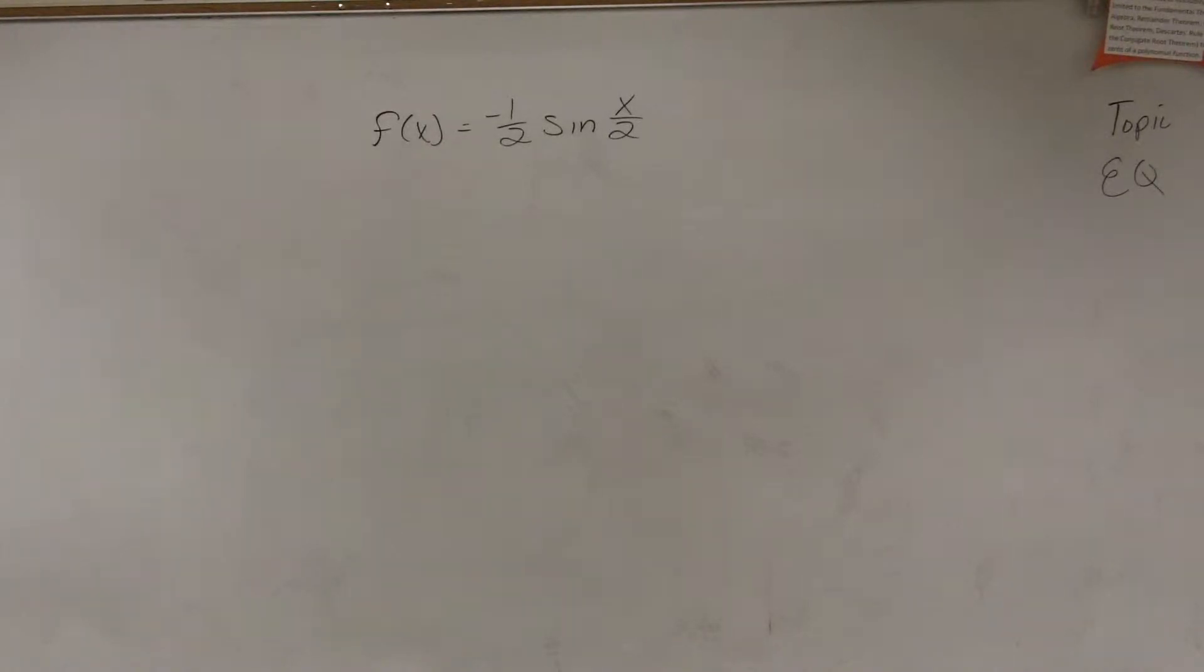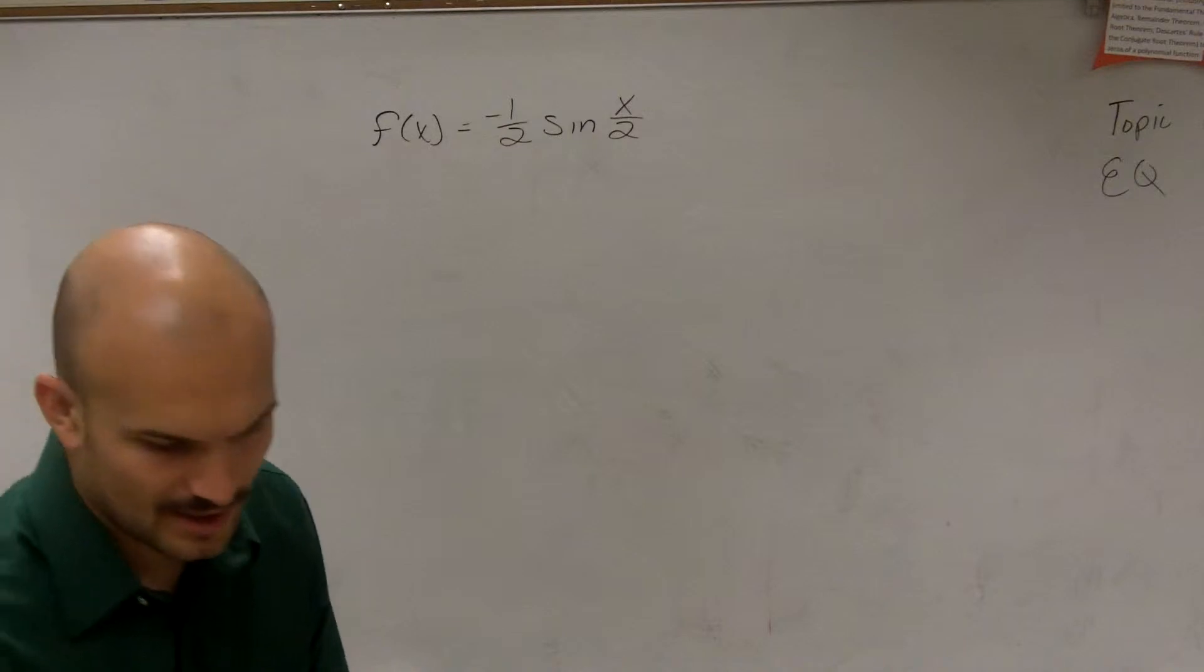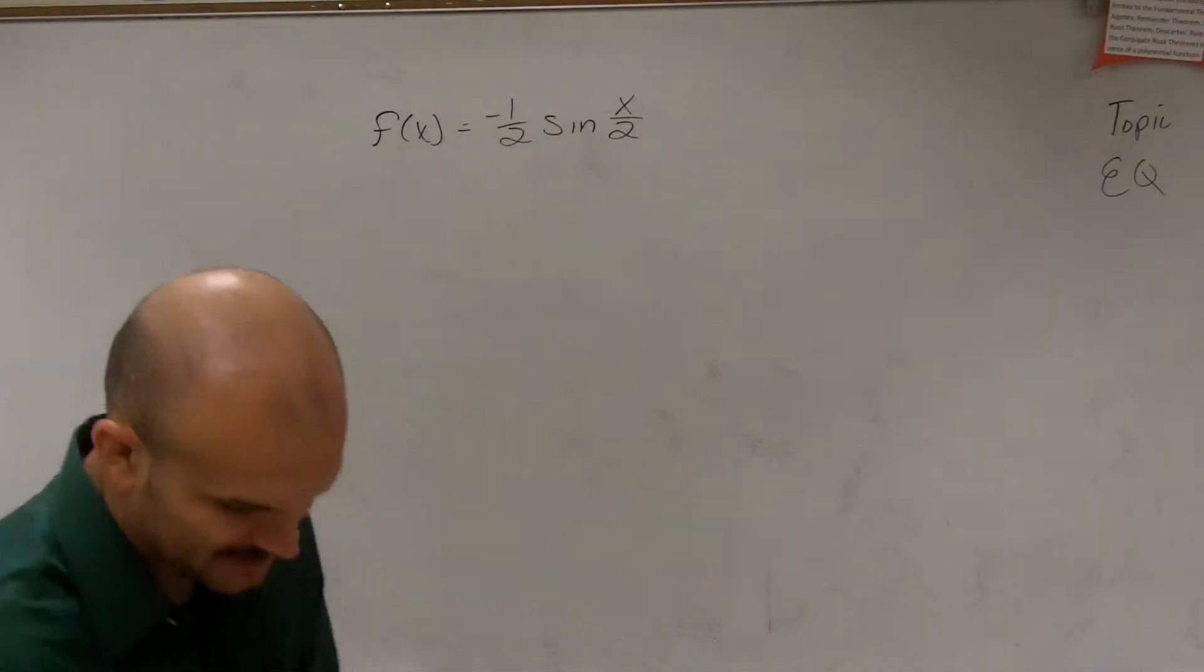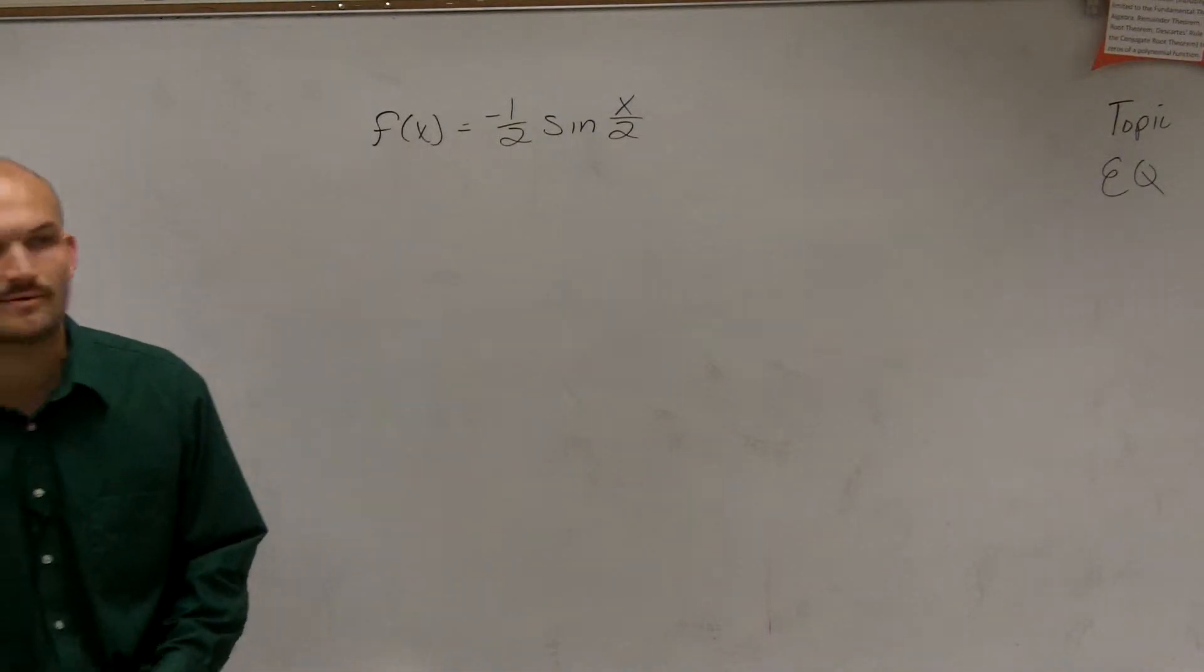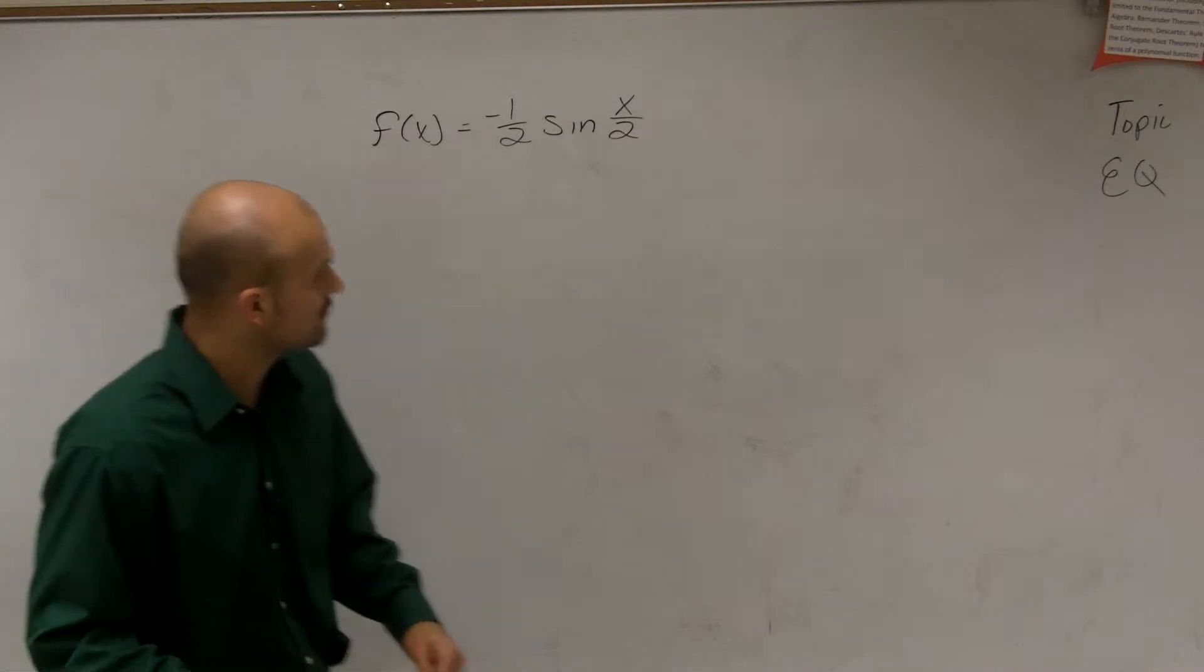All right, so what I want to show you guys how to graph is f of x equals negative 1/2 sine of x divided by 2. When looking at a problem like this, the main important thing is not to try to overcomplicate this, but let's just try to find everything that we know that we need to be able to figure out for this.